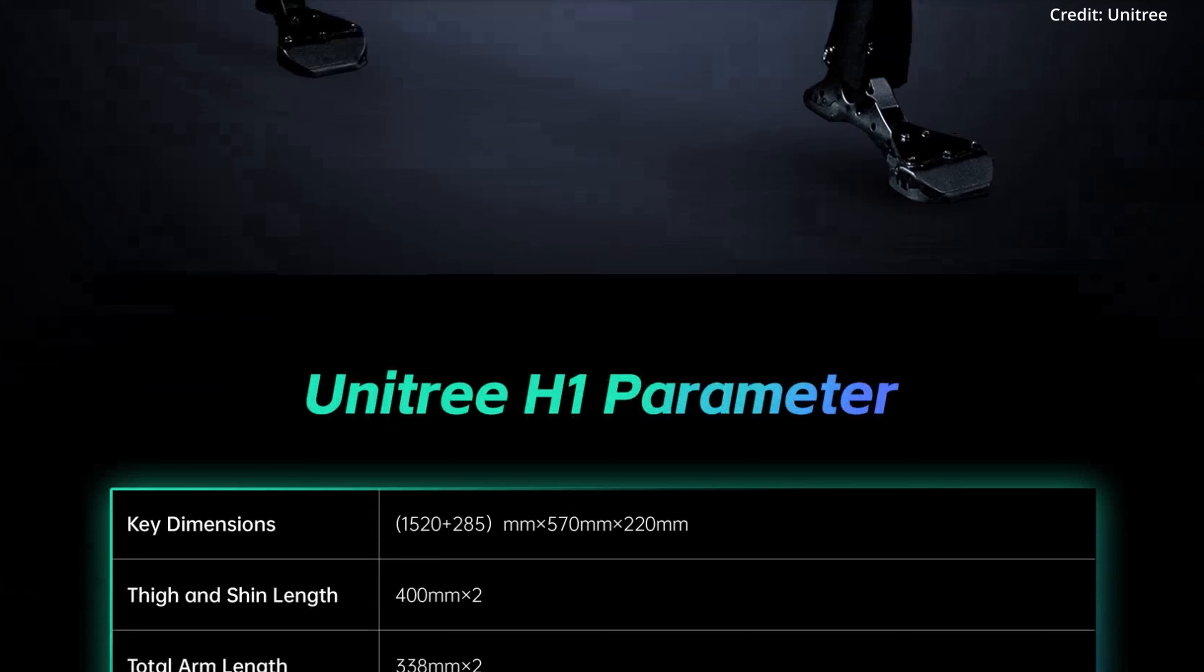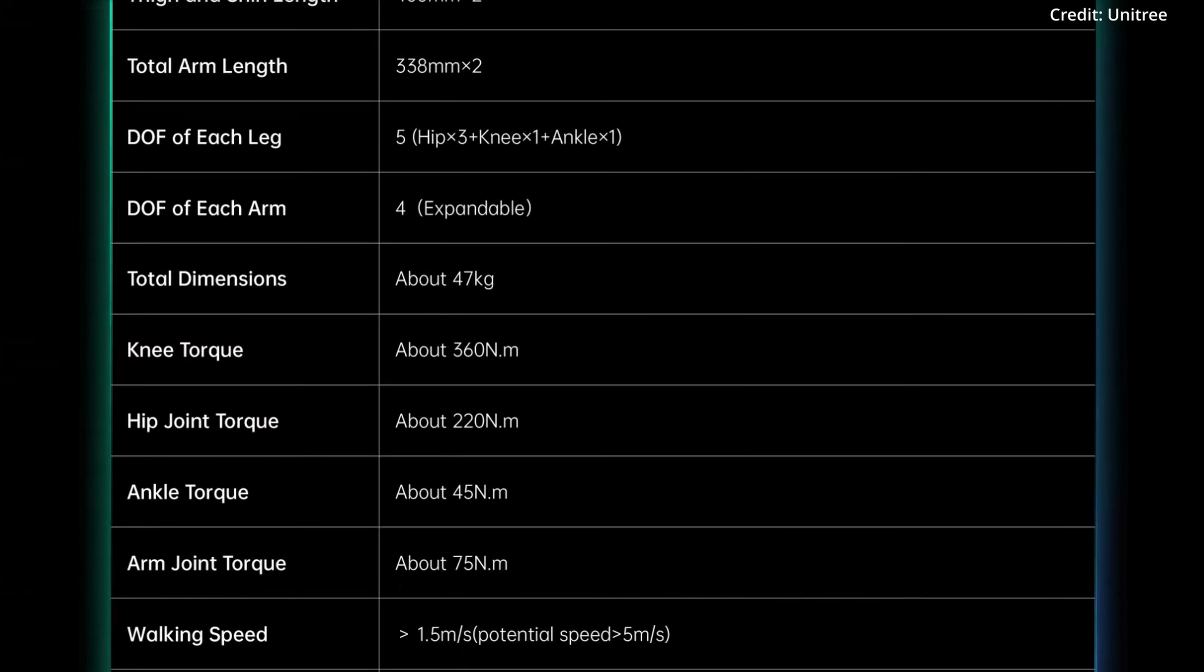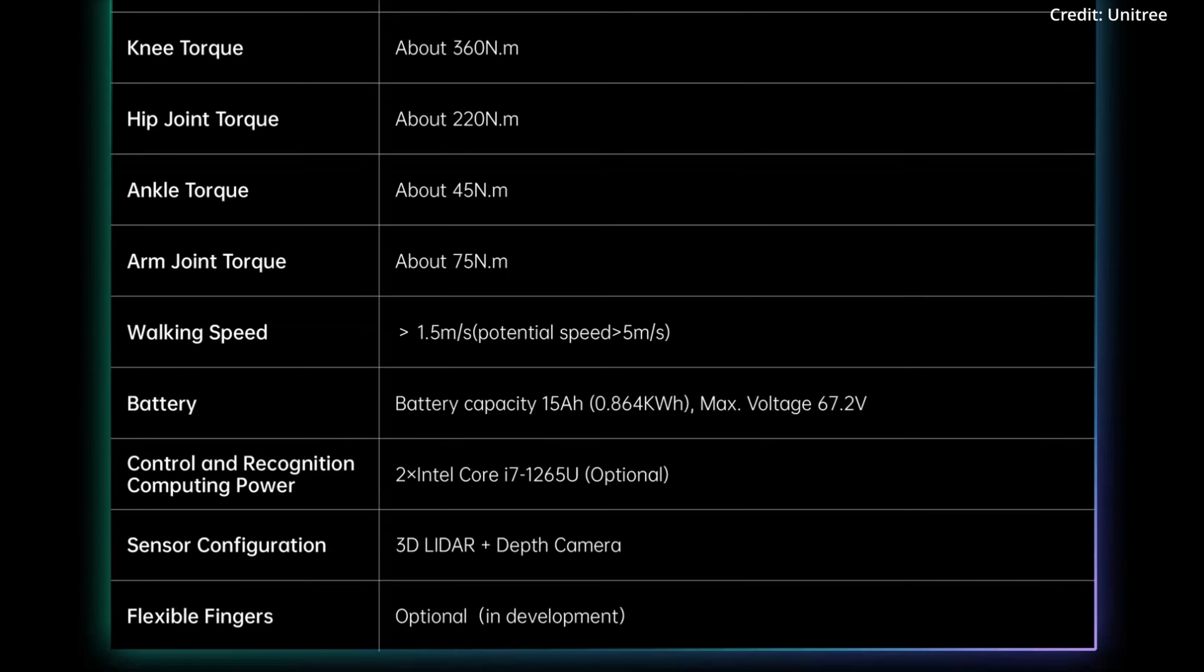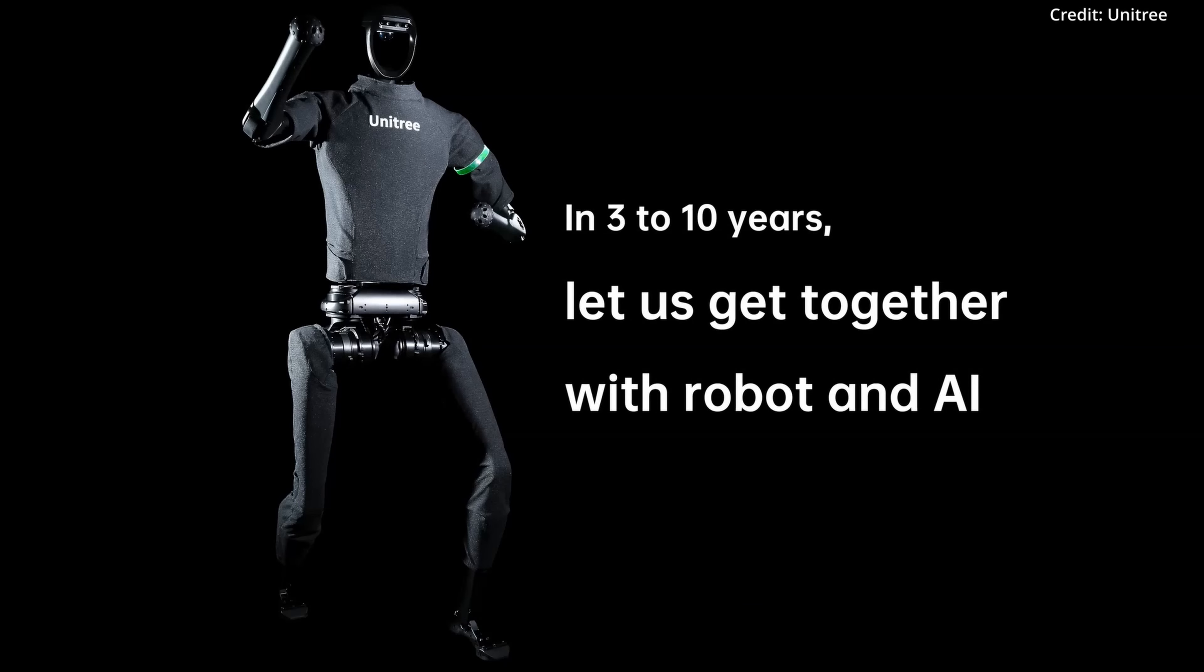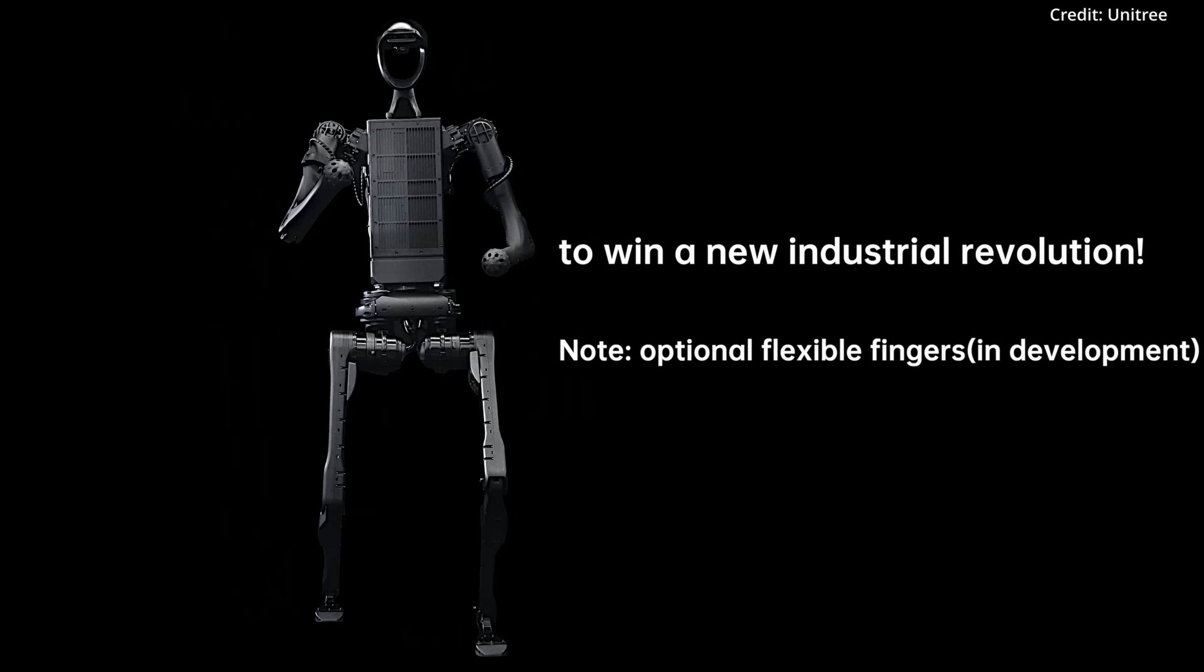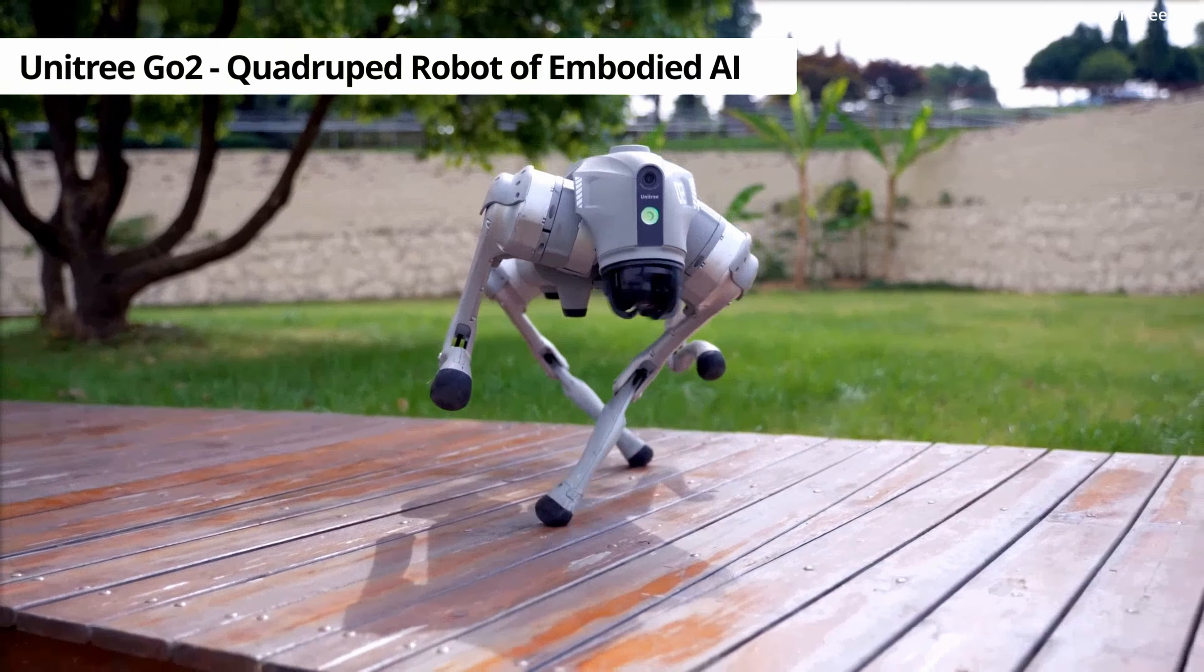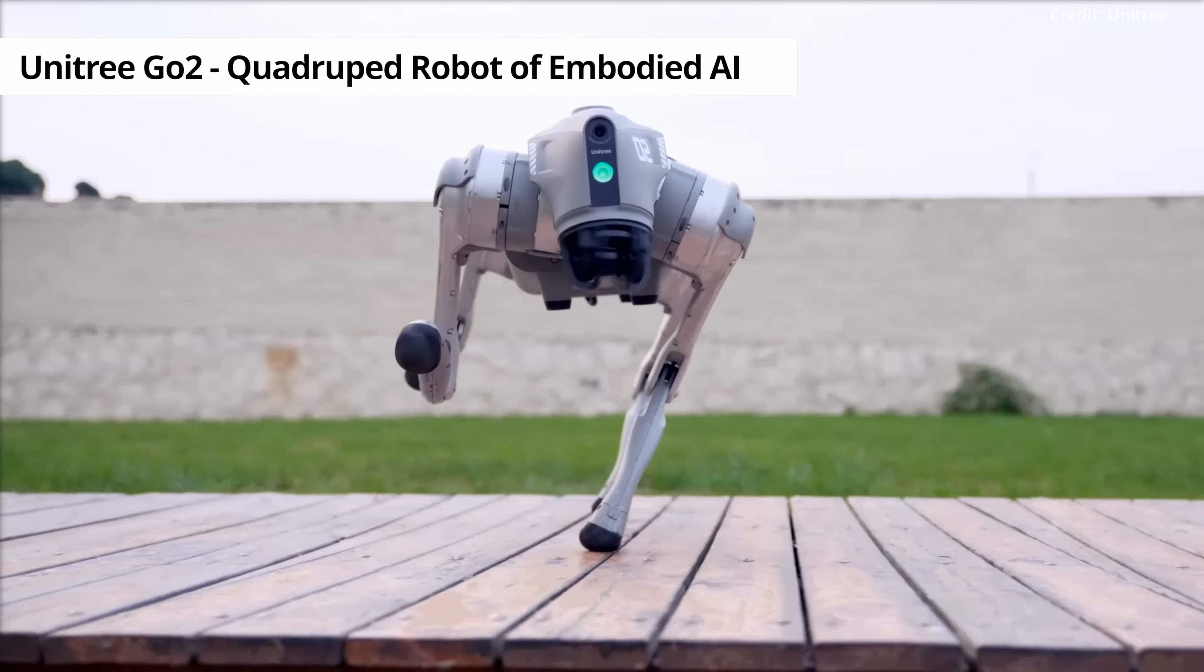Standing at an impressive height of 71 inches and weighing 47 kilograms, H1 exhibits a walking speed of 3.4 miles per hour, comparable to that of an average human. The company is currently working on developing robotic hands and flexible fingers for H1, further expanding its range of capabilities and potential applications.